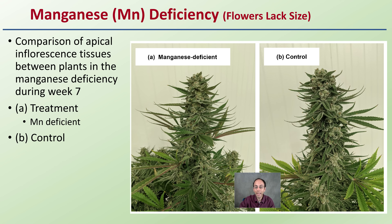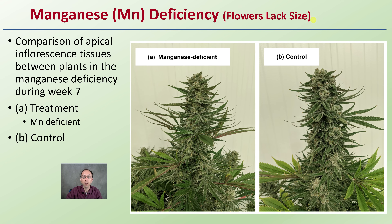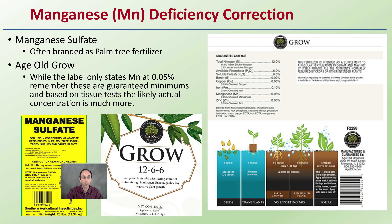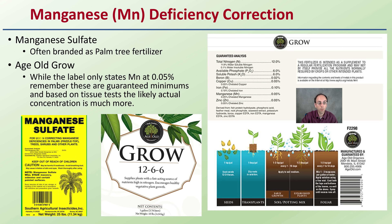Manganese is different from magnesium — it basically results in a lack of flower size. Most growers will think they have a manganese deficiency when they don't. Comparing the manganese-deficient plant versus the control at week seven, there is only a slight decrease in size and you really need a good side-by-side comparison to tell the difference. To correct it, use manganese sulfate, often branded as palm tree fertilizer. I also personally recommend Age Old Grow — while the label states only 0.05% manganese as a guaranteed minimum, tissue tests show it likely contains more, and it can be used to correct manganese as well as serve as a general fertilizer.